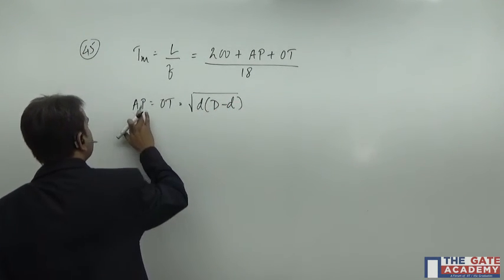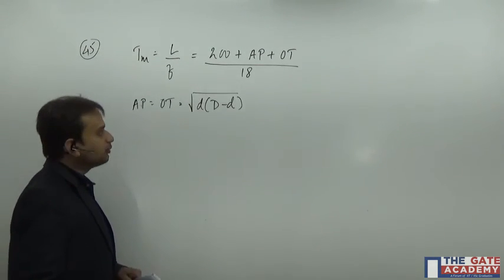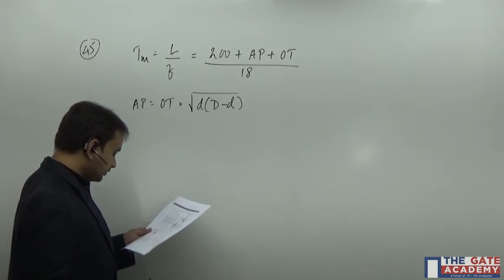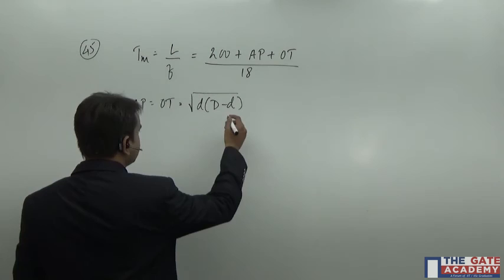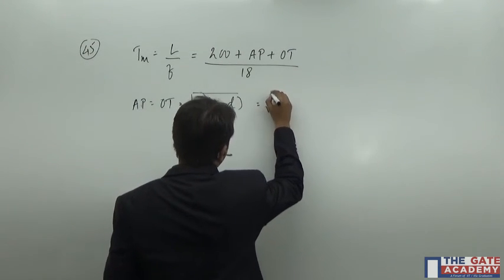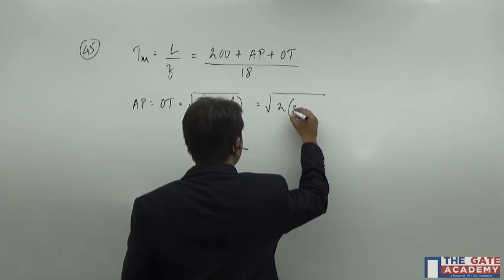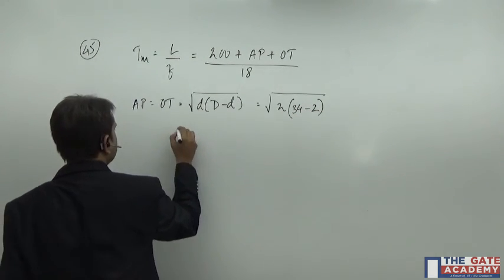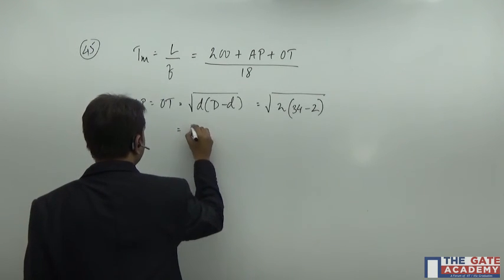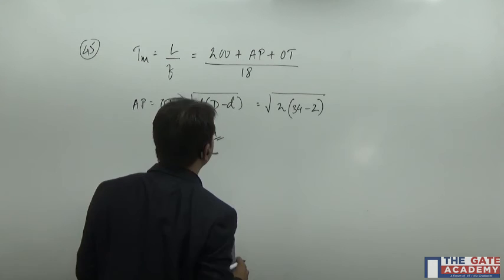Now you must be wondering what is small d, what is capital D. So small d is nothing but the depth of cut which is given to you, I think it is 2 mm is given to you. So small d is nothing but the depth of cut which is 2 and capital D is 34 and that's all. So you will see that it comes out to be 8 mm. So this is nothing but your approach length and over travel.